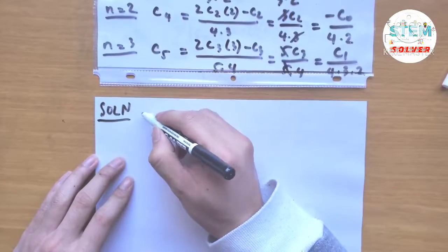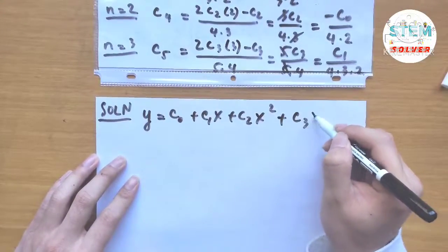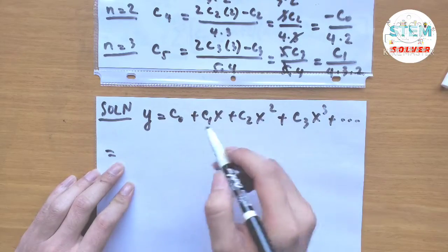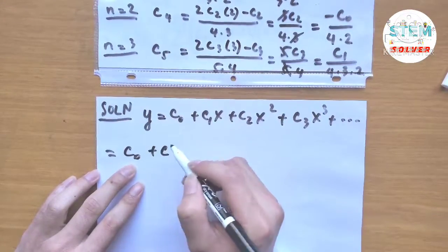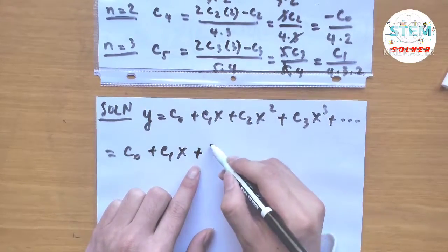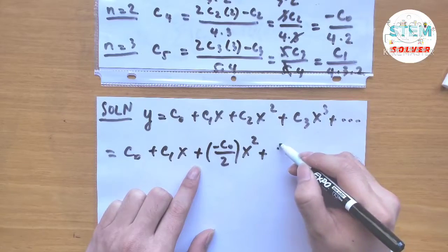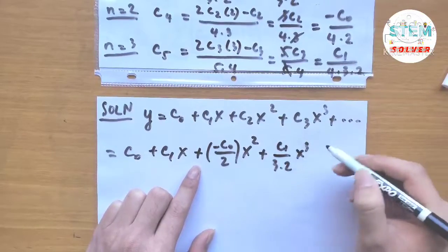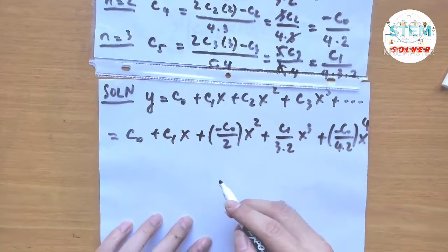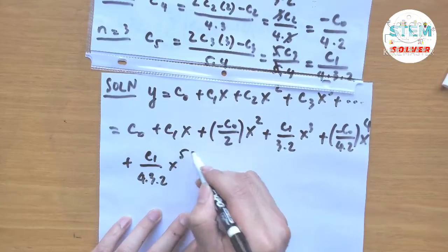Our solution is y equals c_0 plus c_1·x plus c_2·x² plus c_3·x³ plus dot dot dot. Plugging in the coefficients: c_0 plus c_1·x minus (c_0/2)x² plus (c_1/3·2)x³ minus (c_0/4·2)x⁴ plus (c_1/4·3·2)x⁵ plus dot dot dot.